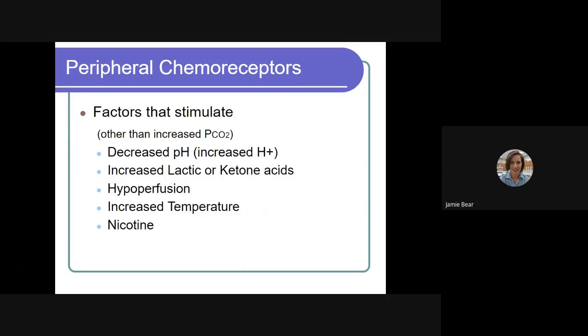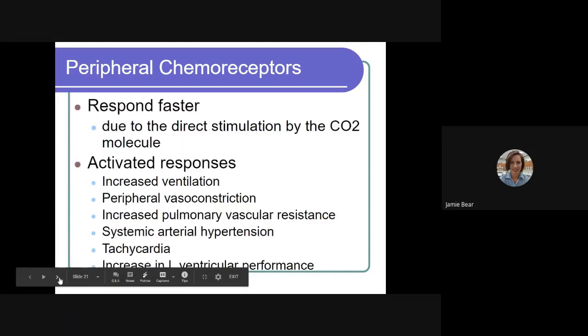Factors that stimulate the peripheral chemoreceptors other than increased CO2 or decreased pH. So an increase in hydrogen ion concentration, an increase in lactic or ketone, those fixed acids in the body, hypoperfusion, increased temperature or nicotine. They will respond faster due to the direct stimulation by the CO2 molecule, which also helps the peripheral chemoreceptors respond.